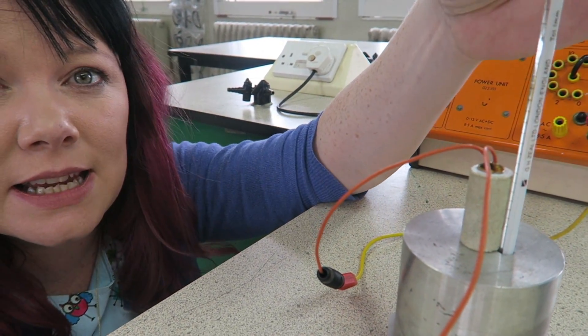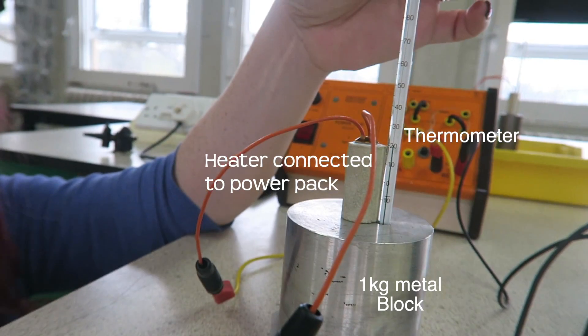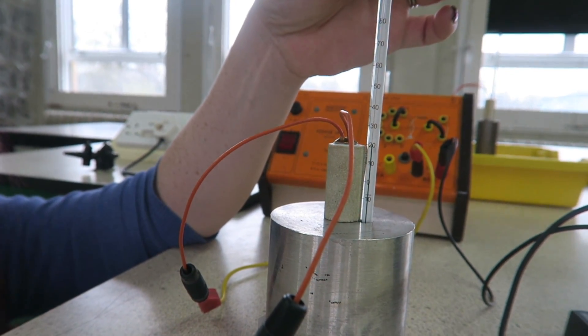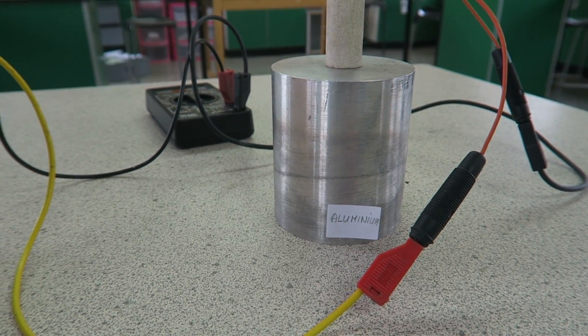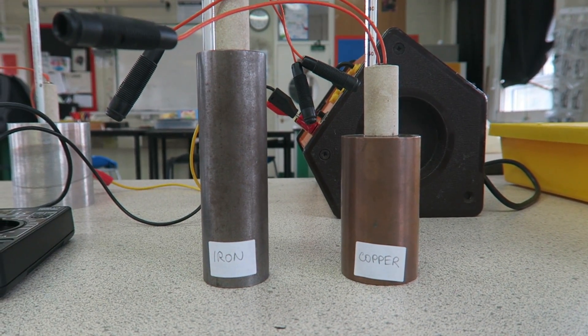Back in the lab again. Here is our setup for specific heat capacity. We have our blocks, we have our thermometer. We've got aluminum set up at the moment and we have iron and copper.